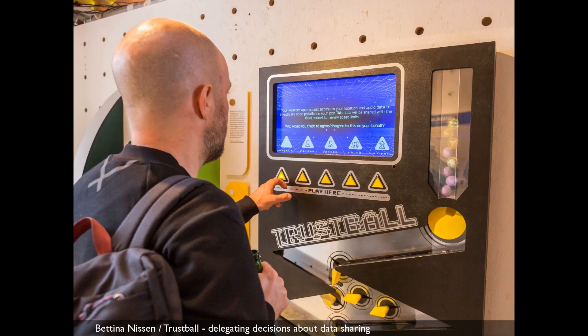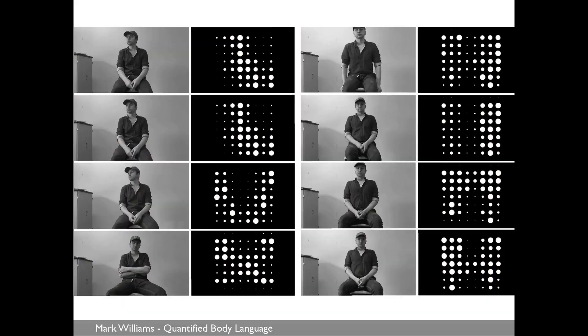Bettina Nissen's piece 'Trustful' looks at the idea that we have too many decisions to make about who we trust with our data — can we delegate some of that? It's a quiz asking when might you delegate decisions to your partner, mum, best friend, or an AI about what can and can't be done with your personal data. There's also a smart fabric chair cushion that can sense your 'bum print' — which lets us think through: if you've got that data you can look at posture, emotional state, and suddenly ask who gets to see that data and make inferences about it.